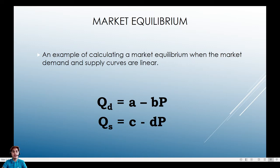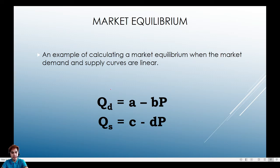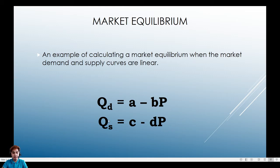So how can we get our equilibrium quantitatively? Remember our demand function: quantity demanded equals a minus bP. This is our demand function. And our supply function: quantity supplied equals c plus dP. The negative sign in the demand function implies an inverse relationship between quantity and price.